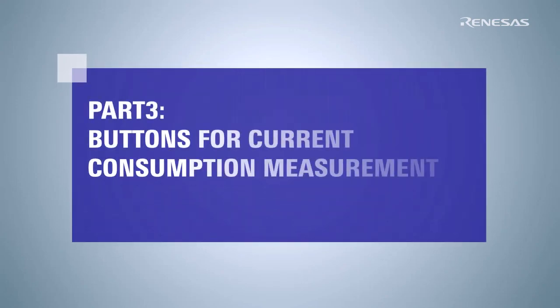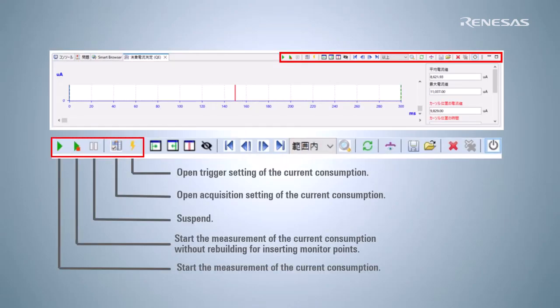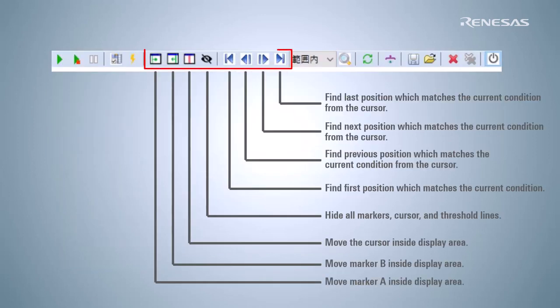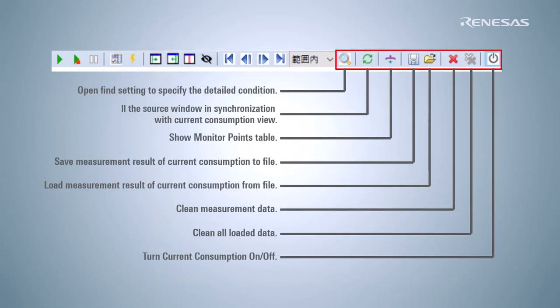The following explains the buttons located in the current consumption measurement window. These five buttons are related to current consumption measurement; you can use them to start and stop the measurement and to set the conditions for the measurement. These buttons are related to the cursor and marker. Other buttons allow you to display and hide the list of monitoring points, save and load current consumption data, etc.